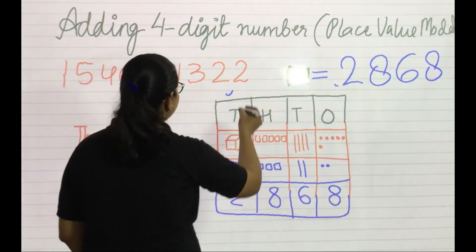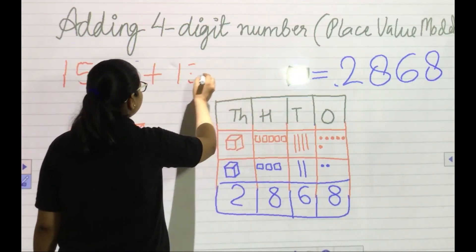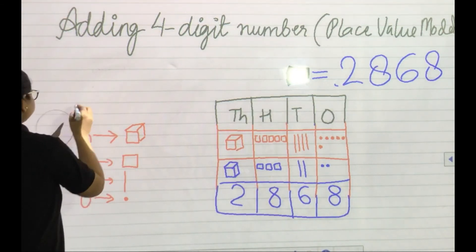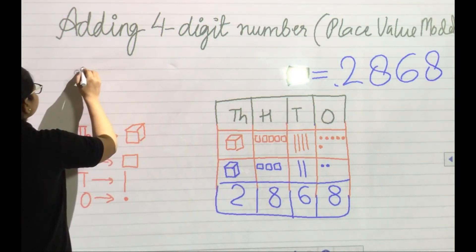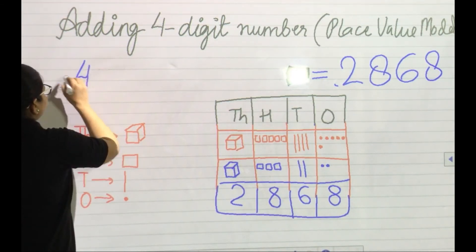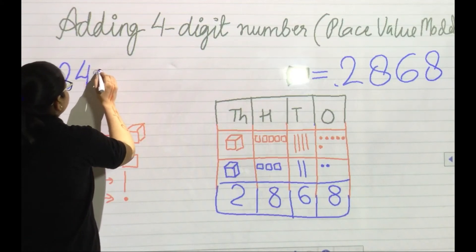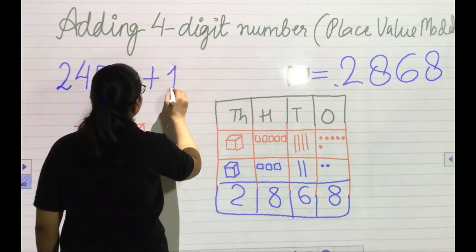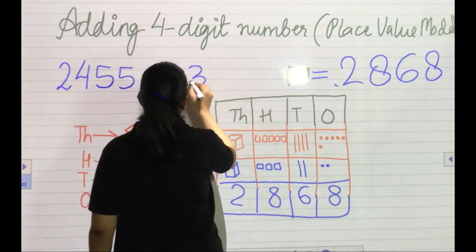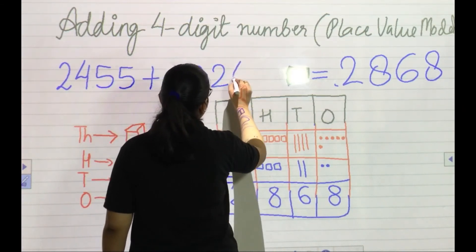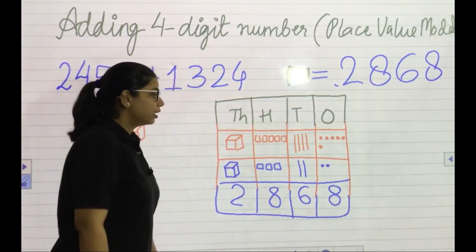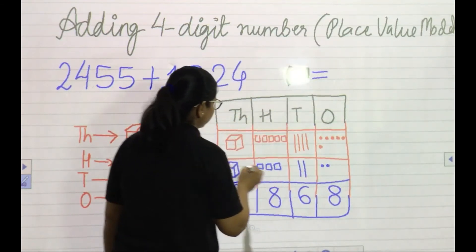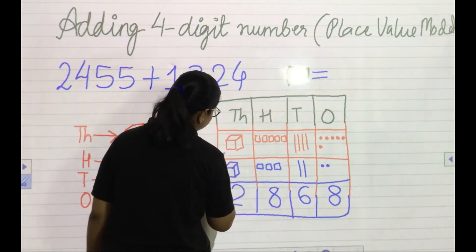Very good! Now the next question — the last practice question for today. This is 2455 plus 1324. Continue — 15 counts again for this.